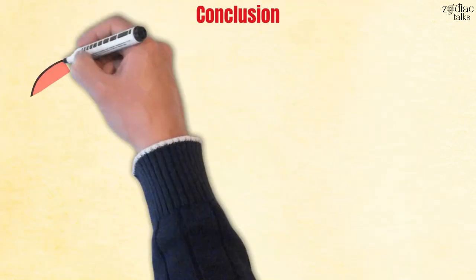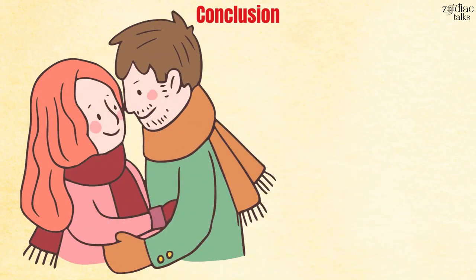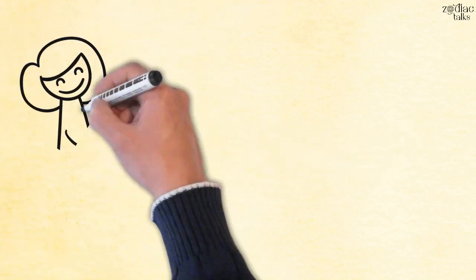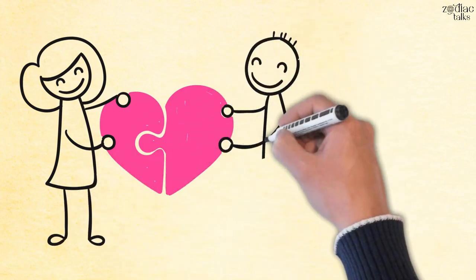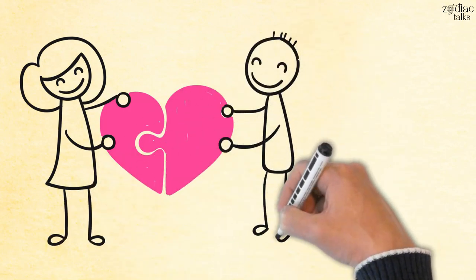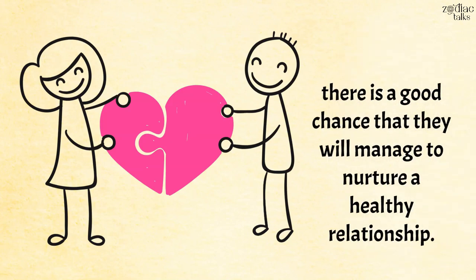Conclusion. On a scale of 1 to 10, the overall compatibility for the Capricorn woman and Taurus man is a 7. This partnership can be one of the most grounded and reliable bonds. As long as both of them are able to handle minor issues and manage to communicate sincerely, there's a good chance that they'll manage to nurture a healthy relationship.